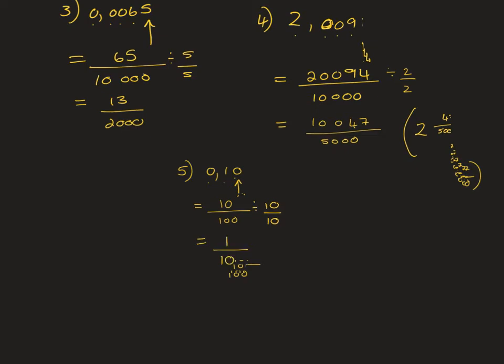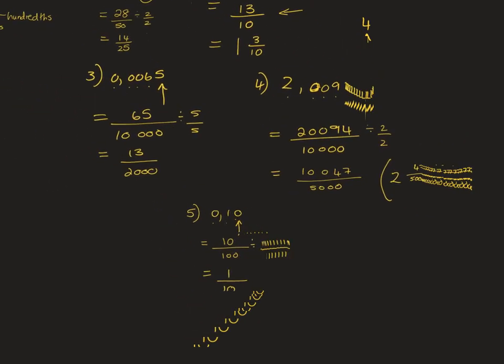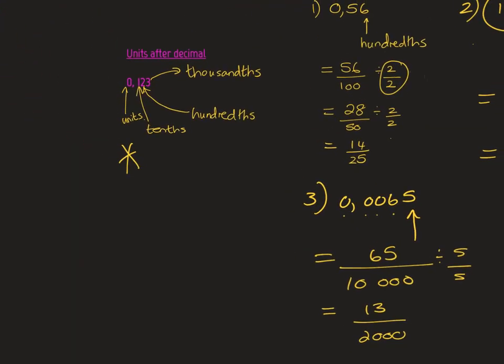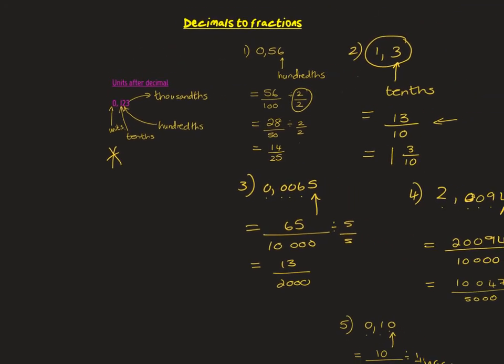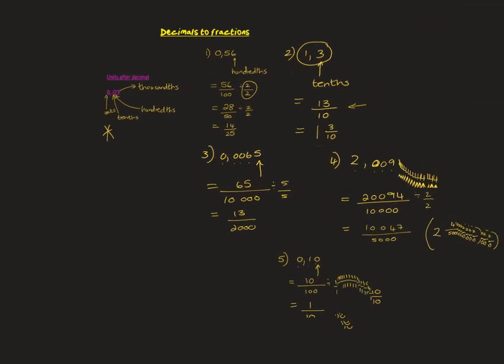So that is your decimals to fractions. Look at what your positioning is after the decimal — we went even up to the ten-thousandths. Whatever positioning you're working with, that's what you put in your denominator as your base ten.